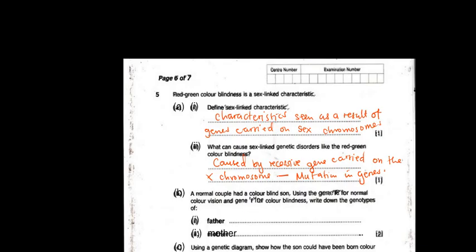Question 5B says a normal couple had a colorblind son. Using the genes for normal color vision and genes for color blindness — my paper is a little blurry so I can't read everything properly — write down the genotypes of B1, the father, and B2, the mother.